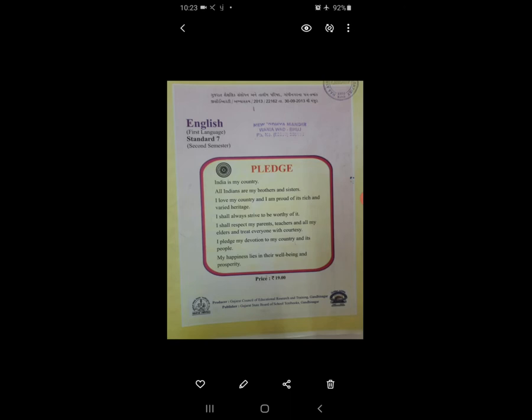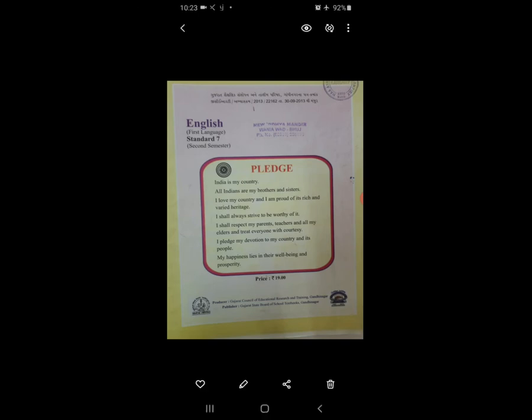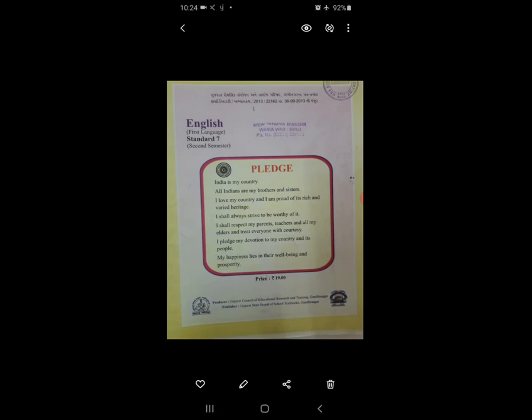Indirect use में है food we eat — खाना हम खाते हैं तो उसको बनाया जाता है, तो energy पहले बनती है, फिर हम उसको खाते हैं, तो food we eat है वो indirectly use है. ऐसे ही heaters use करते हैं तो वो directly use होता है, लेकिन books we read — जो हम पढ़ते हैं, उसमें भी energy use होती है, वो indirectly होती है.